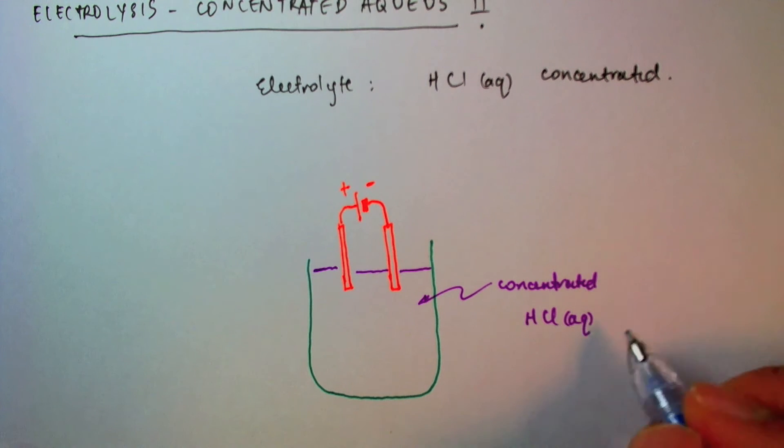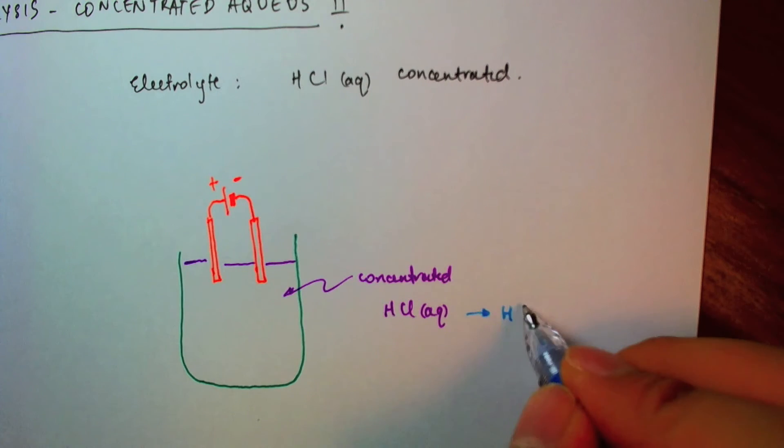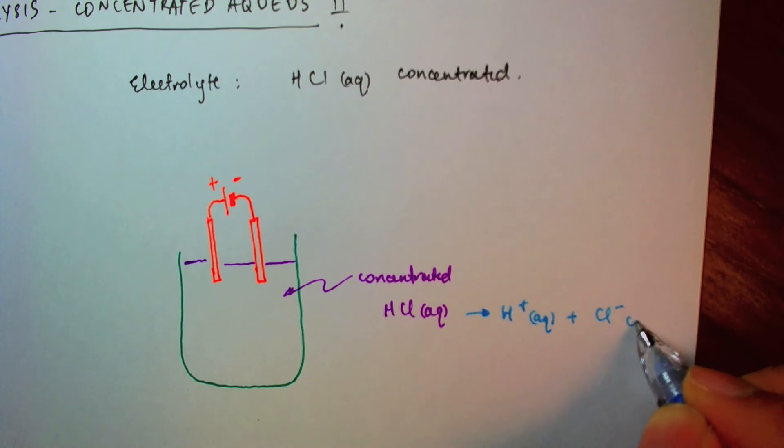So this HCl will break up into hydrogen ions and chlorine ions.